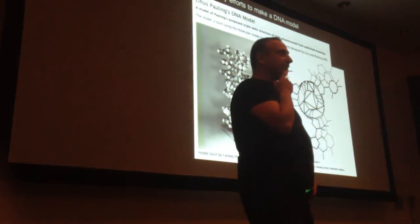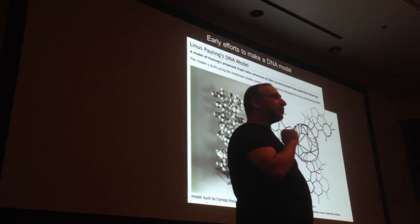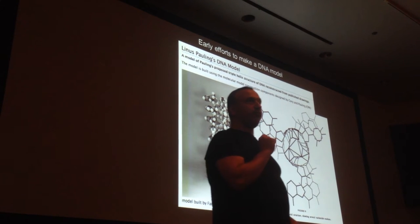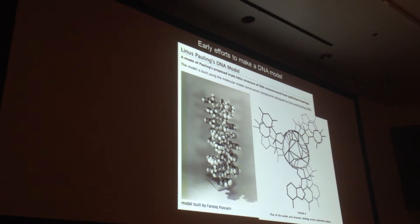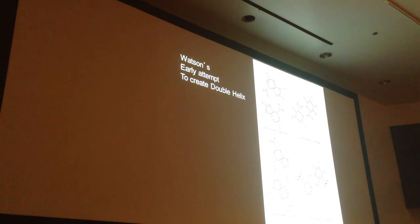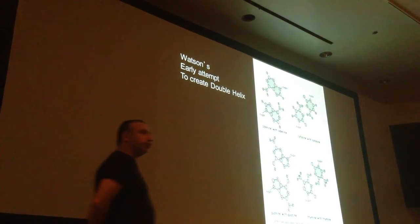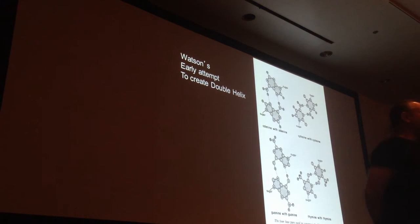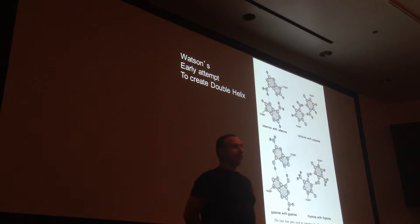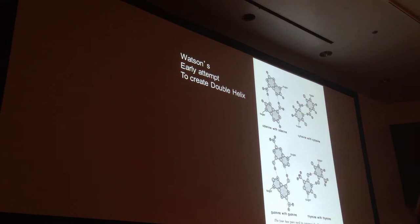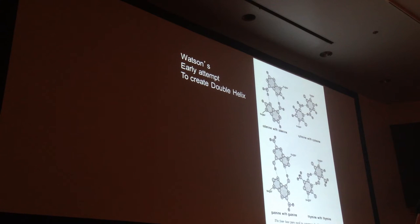This model has one important flaw that Watson immediately realized, and it's why Watson was able to do the double helix. Watson's early attempts to make a double helix were to pair A with A, C with C, G with G, and C with T. Why would Watson want to pair A with A, C with C, G with G? Because of how the ratios shown in Chargaff differed?